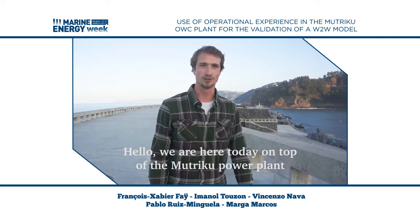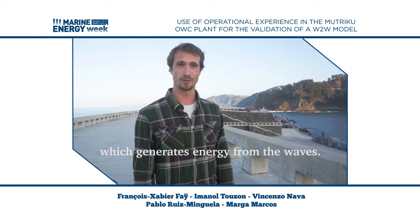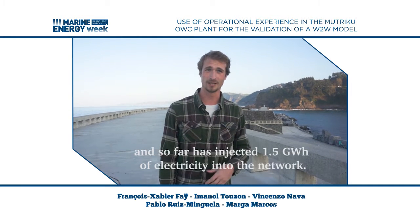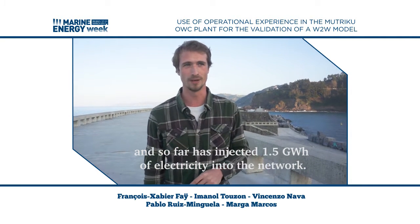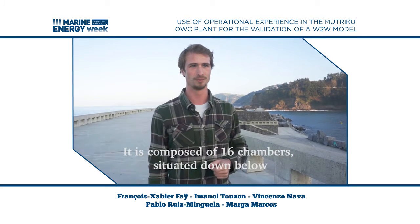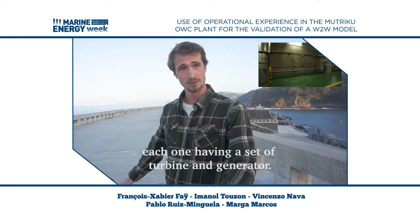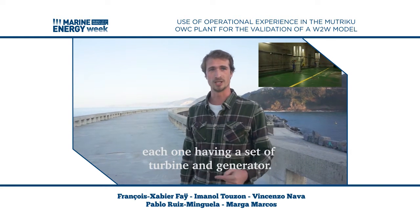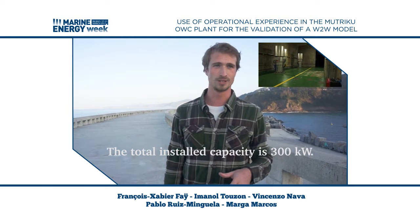Hello, we're here today on top of the Muchuku power plant which generates energy from the waves. It started operating in 2011 and so far has injected 1.5 gigawatt hours of electricity into the network. It's composed of 16 chambers down below, each one having a set of turbines and generators. The total installed capacity is 300 kilowatts.